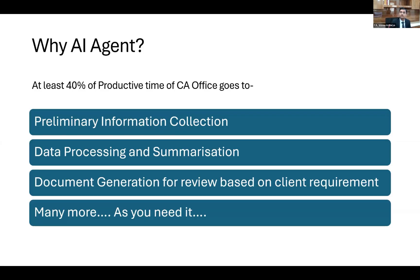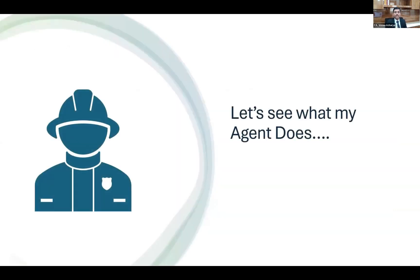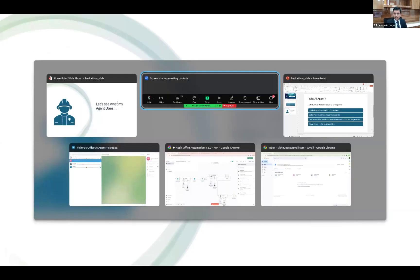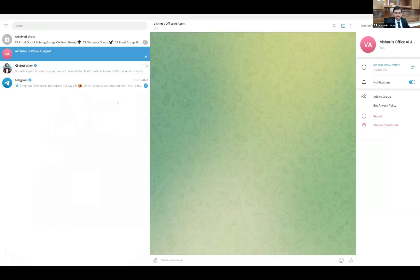With AI agents you can do many more things. My use case here is not about how to do an audit with an AI agent — it's about how to make our operational processes more efficient. My agent is Vishnu's Office AI Agent. It is a simple Telegram bot. Why Telegram? Just ease of convenience — I can have a normal chatbot as well. Let's see how it works.